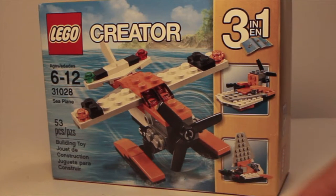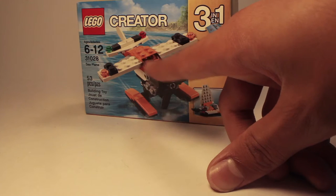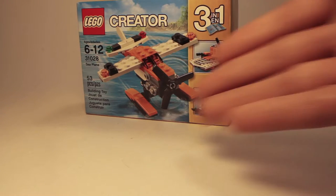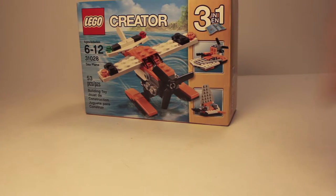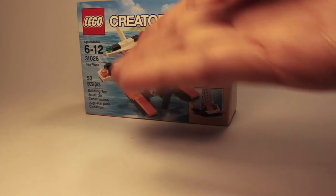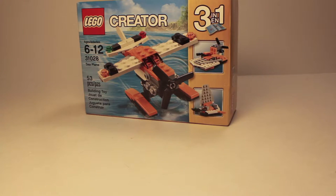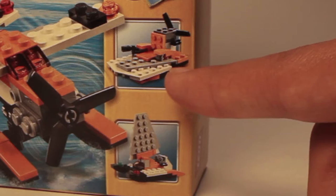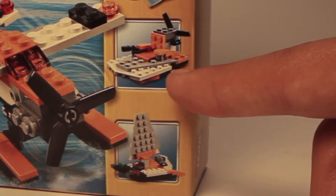And of course this is a three-in-one set. So with the parts in this box you can make three different types of Creator models. You can make a seaplane, which is obviously the featured model of the set. We also have like this little swamp boat, and we have a sailboat.